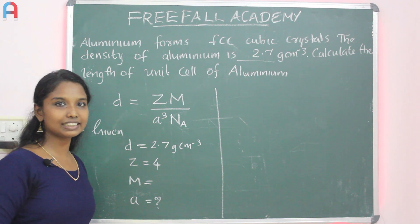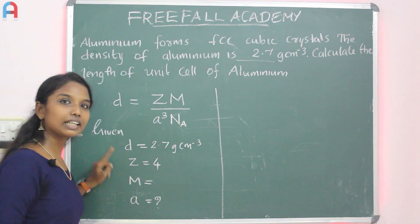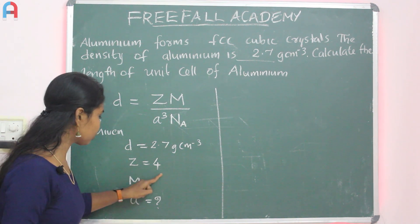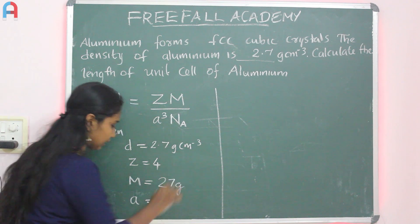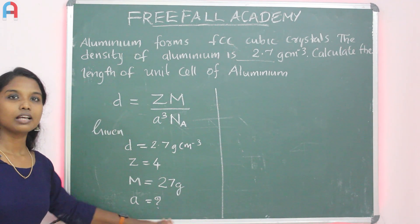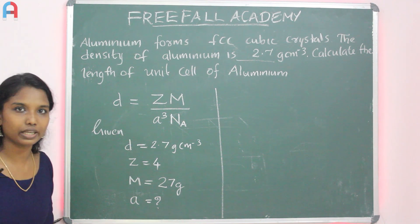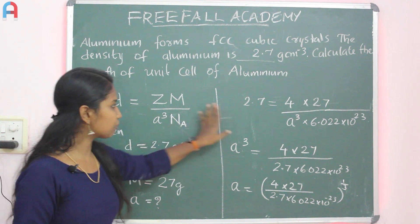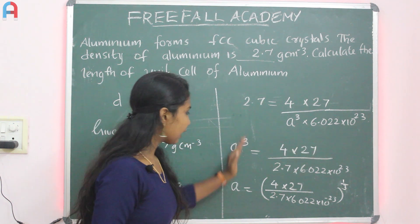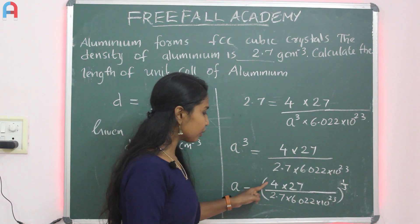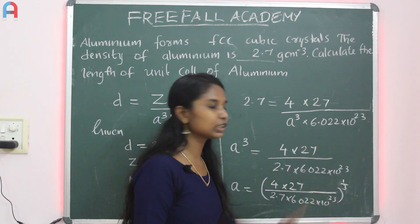With density 2.7 g/cm³ and FCC giving Z = 4 atoms per unit cell, the molar mass M of aluminum is 27 grams. We rearrange the density formula and substitute: A equals (4 × 27) divided by (2.7 × 6.022 × 10²³), all raised to the power of 1/3.